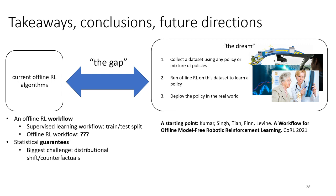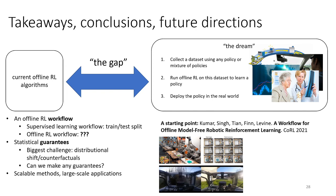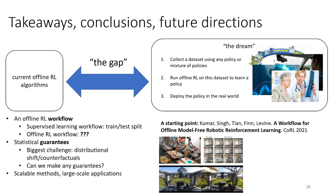Statistical guarantees are a big open problem in offline RL — there are bounds and results involving distributional shift, but they tend to be pretty loose and incomplete. And of course, scalable methods and large-scale applications remain a challenge. In principle, offline RL can be applied to a wide range of settings, but in practice it still hasn't been applied that widely. Better understanding the real limitations and constraints of real world applications is really important, and there are a lot of open questions as to what goes wrong when we apply these methods outside of robotics.